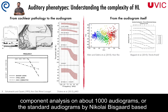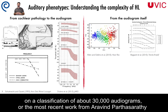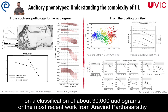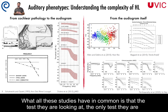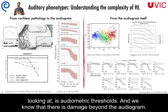Also the standard audiograms by Nikolai Visco, based on a classification of about 30,000 audiograms, or the more recent work from Aravin Pazasarati, using Gaussian mixture models to find clusters in a very large dataset from Masa ENeas. What all these studies have in common is that the only test they are looking at is audiometric thresholds. And we know that there is damage beyond the audiogram.